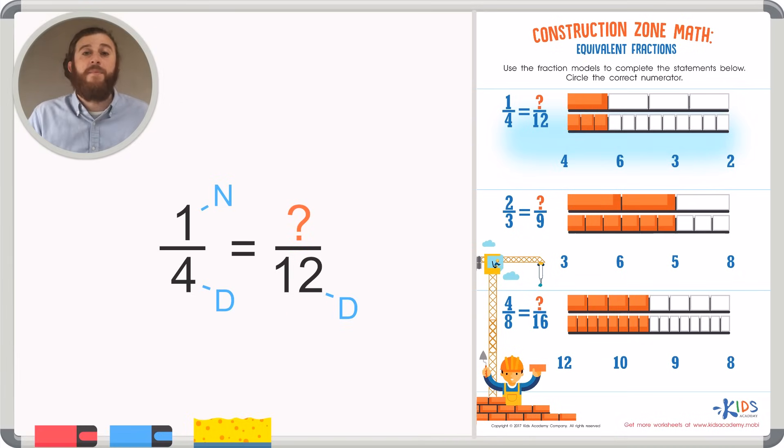Let's count the shaded in pieces to find out. One, two, three bars are shaded. So I think three is the correct numerator. Let's circle three. And if we look closely, we'll see three twelfths takes up the exact same amount of space as one-fourth. And that's what we're looking for in equivalent fractions. So three is the correct numerator.